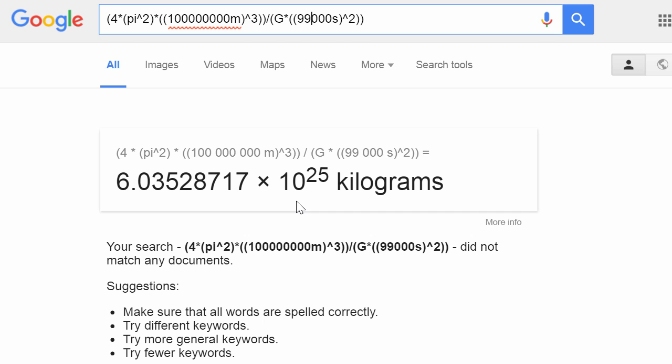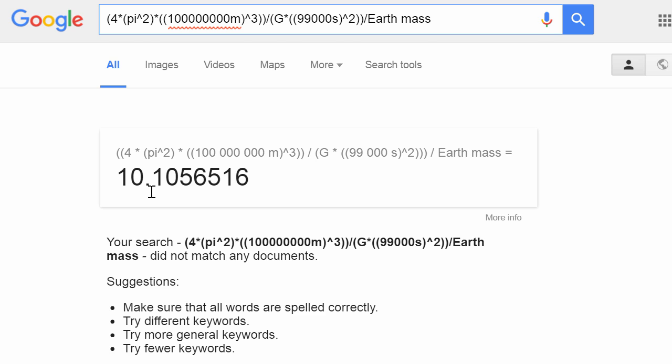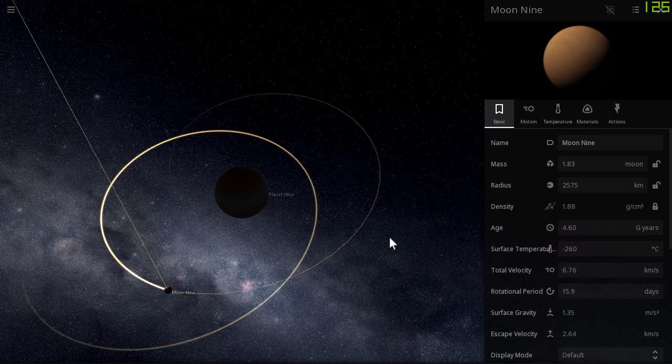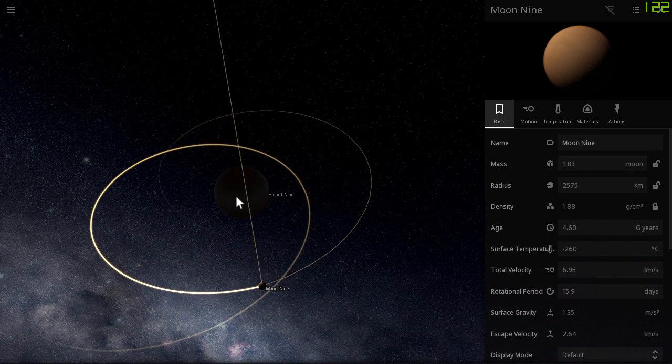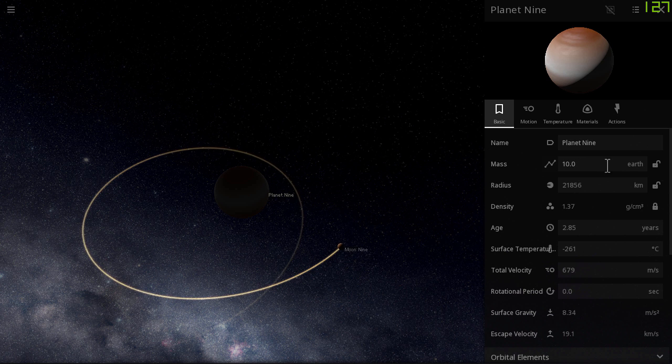The answer I got is 6.03, basically 6 times 10 to the power of 25. So that's in kilograms. How many Earths would that be? The beauty of Google calculator is that it allows you to type commands like divide by Earth mass. So I type Earth mass and it tells me this is approximately 10.1 Earths. Is that correct? Let's find out. We're going to go to Planet 9 and the estimate here is 10 Earths. Excellent.